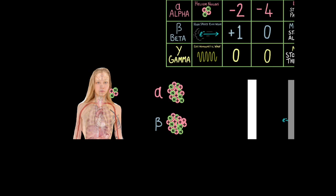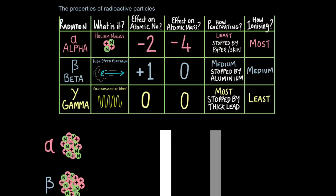In terms of our body well beta particles can basically go through skin but they stop about 10 centimeters into our body because there's too much resistance for them to get through and they get absorbed. So beta particles have a medium penetrating ability. They are stopped by aluminium and they have a medium level of ionizing ability too. They're not the most ionizing but they're not the least either.